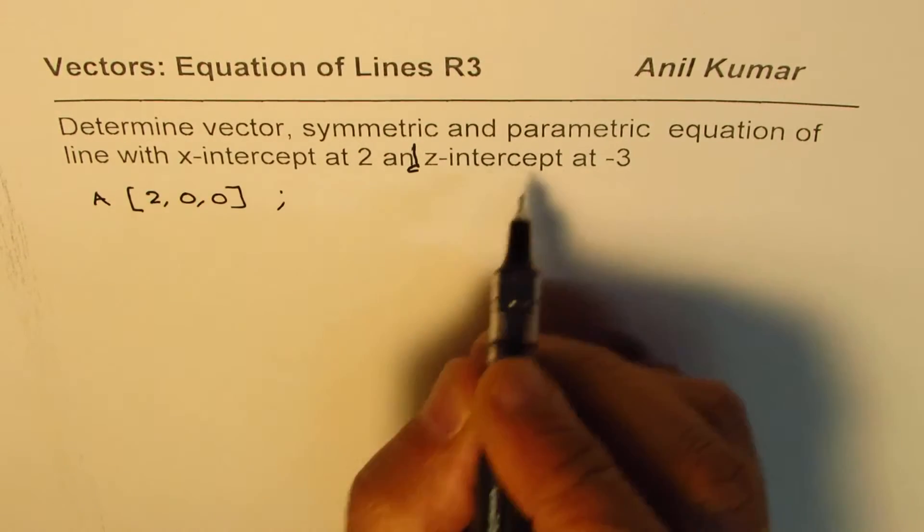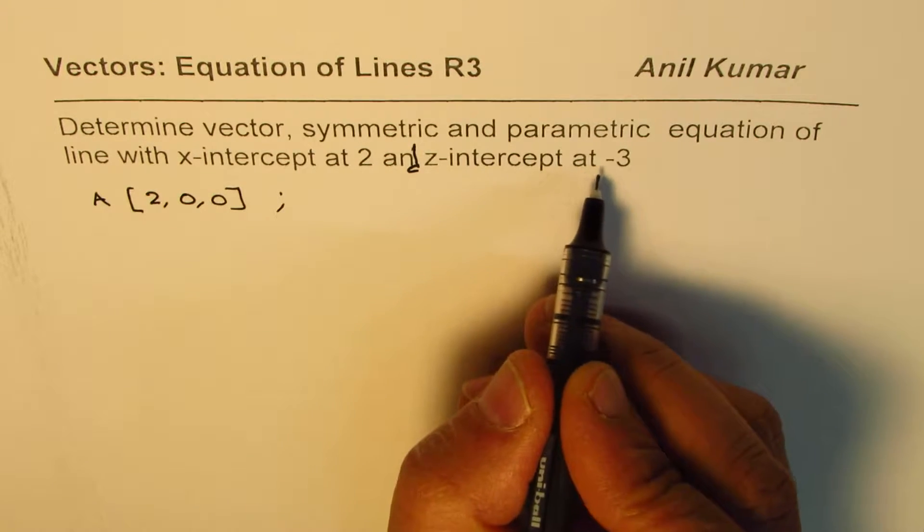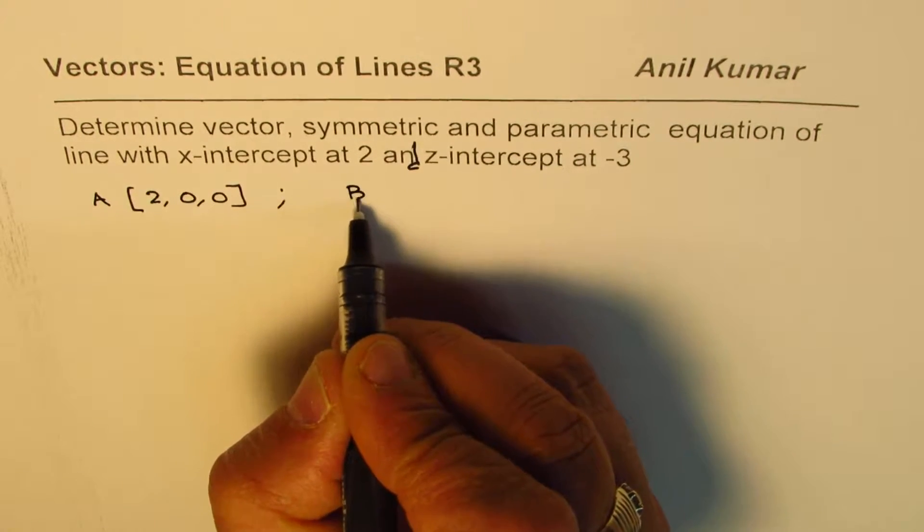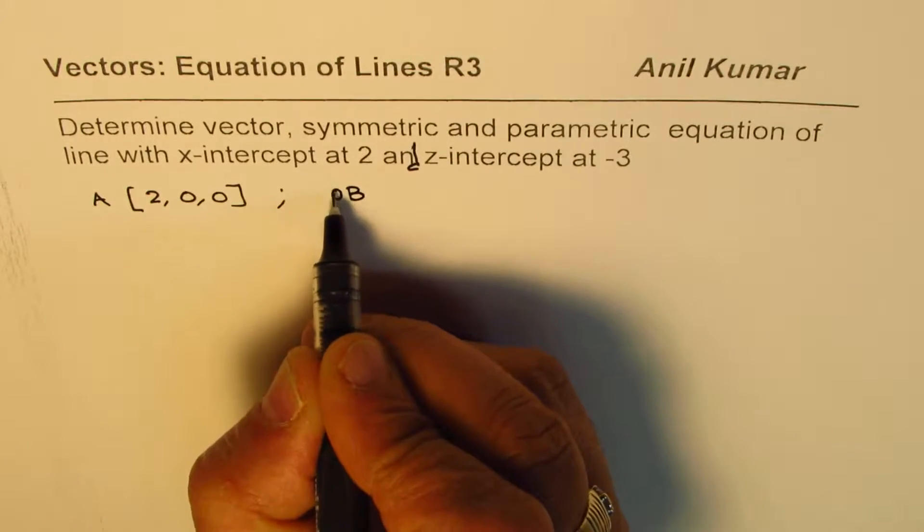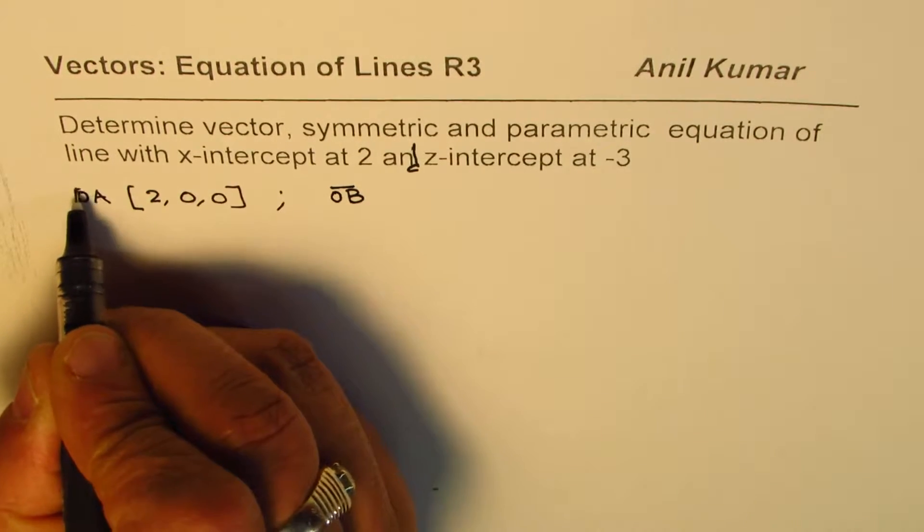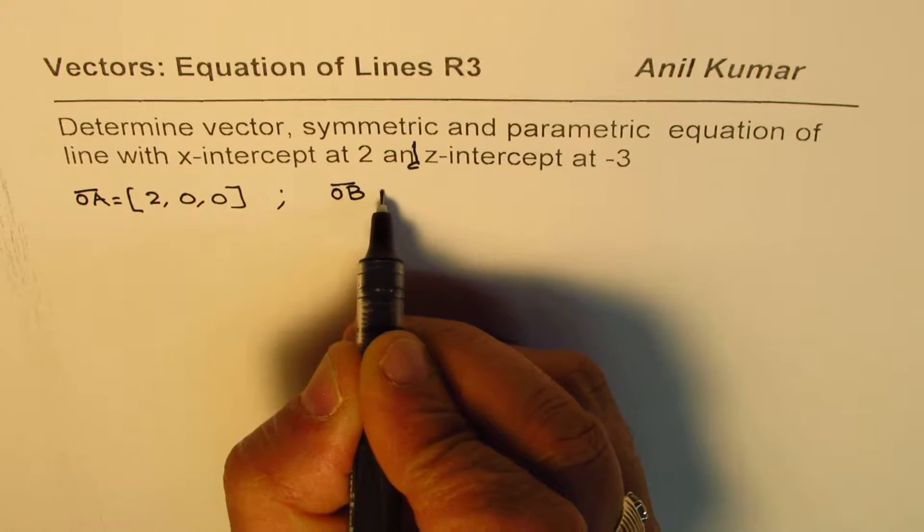That is the x-intercept. z-intercept at minus 3. Let's say this is the position vector. We can also write OB and OA, right? So, if I do that,